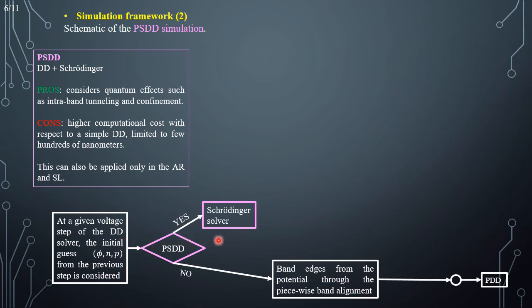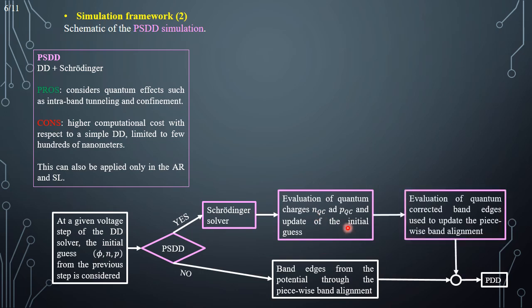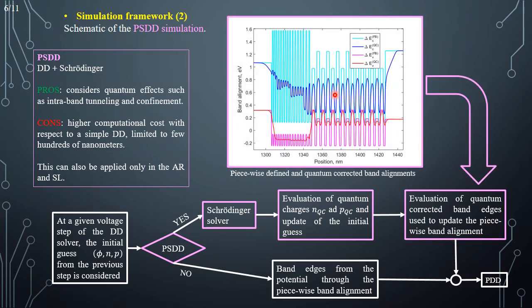If the Schrödinger mode is activated, a Schrödinger solver is called, which is able to obtain the eigenvalues and the eigenfunctions, from which it is possible to evaluate the quantum corrected charges to update the initial guess. From these charges, it is possible to evaluate the quantum corrected band edges, which are used to update the piecewise defined band alignment. In this picture, the cyan and magenta lines are the piecewise defined band alignments seen when the Schrödinger mode is not activated, while the blue and red lines are the smooth quantum corrected lines obtained when the Schrödinger mode is activated.